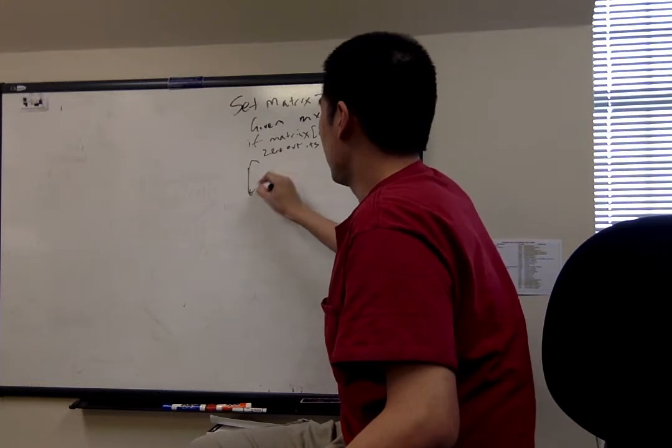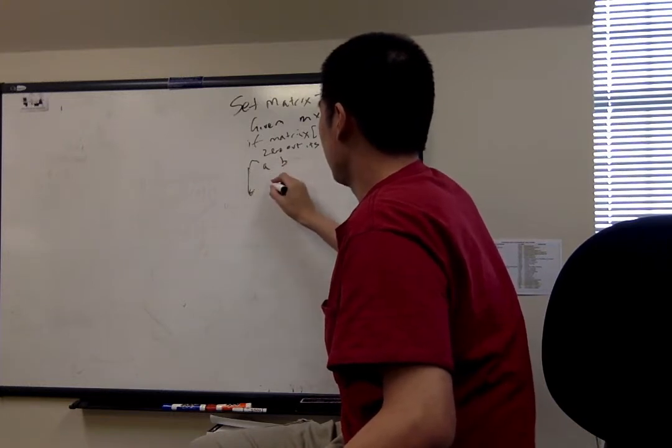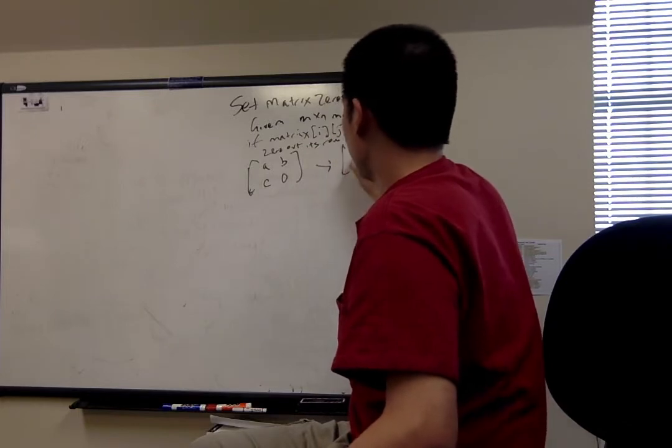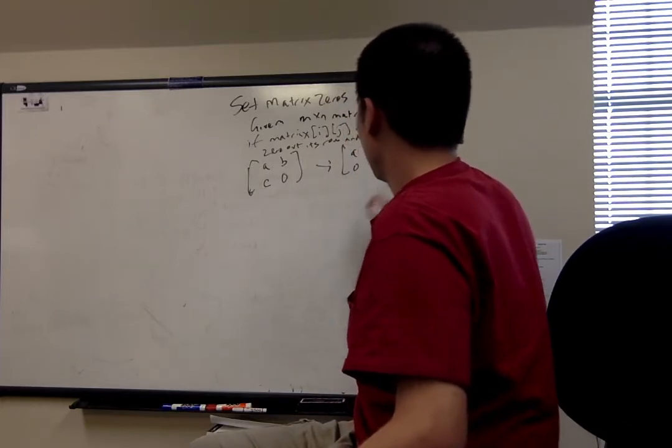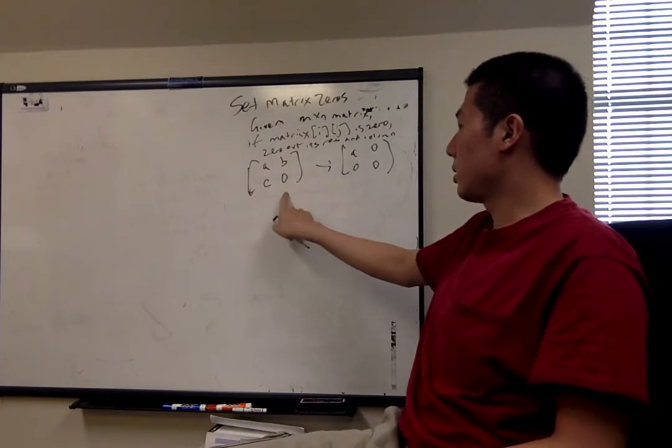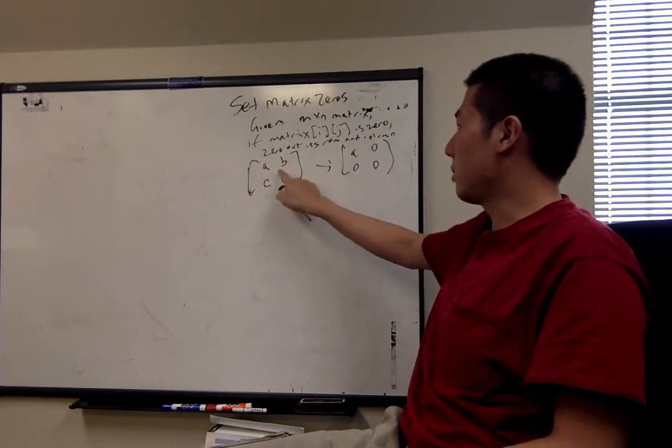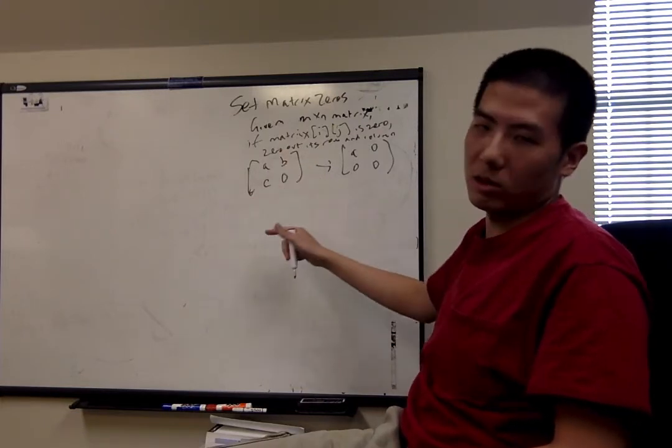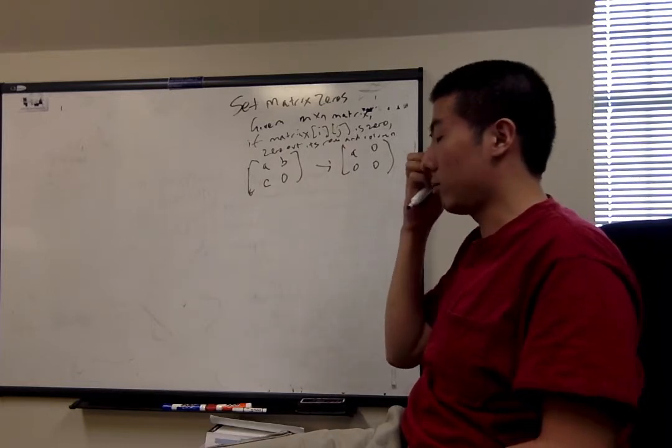For instance, if we had a matrix like a, b, c, 0, then we want to output something like this, where since the first row and first column have a zero in it, they're zeroed out in the output matrix.